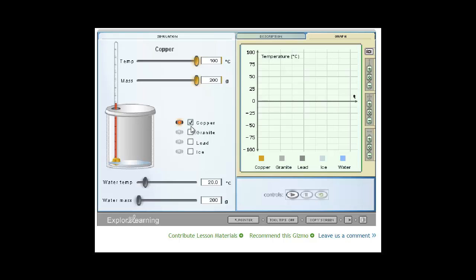So let's see what happens now if we do something other than copper. Let's say we add granite. We'll do the same thing, 200 grams of granite, and we'll start it at 100 degrees Celsius. And similarly, the water heated up even less, and the granite cooled down really quickly. So the heat flow goes from the warmer object to the cooler.